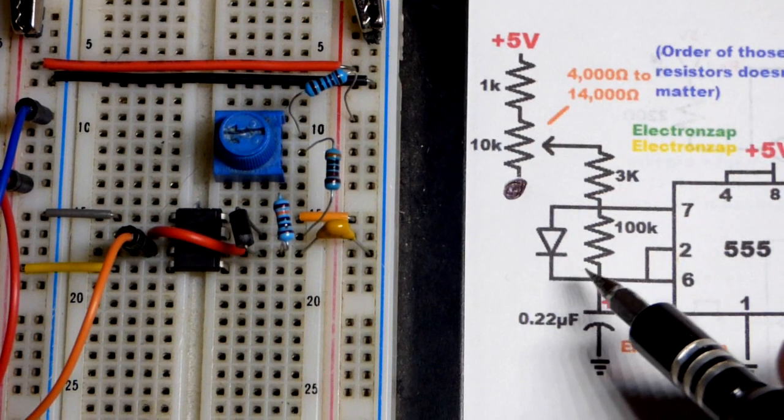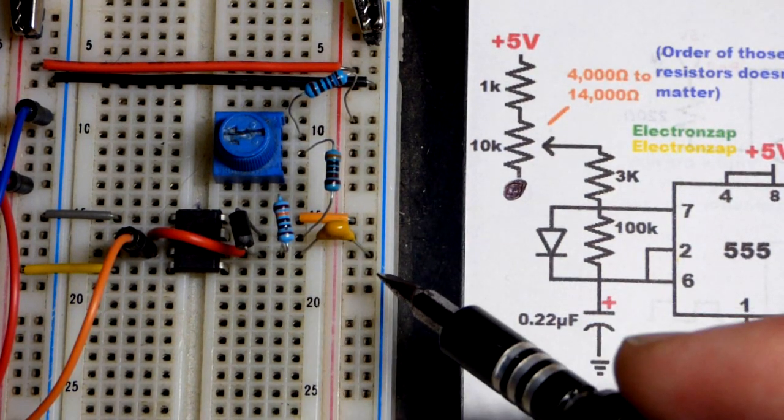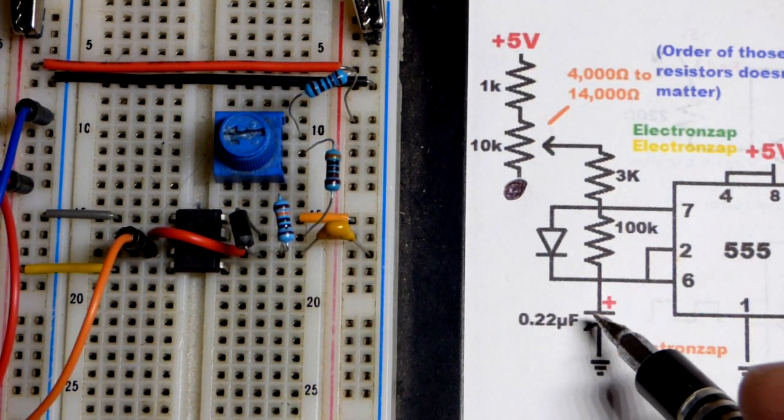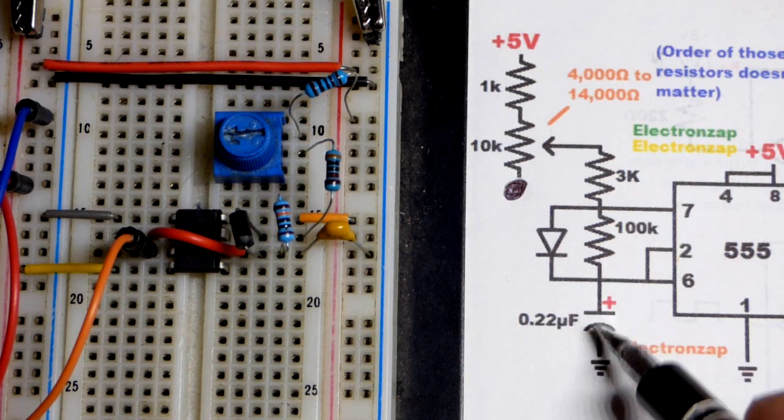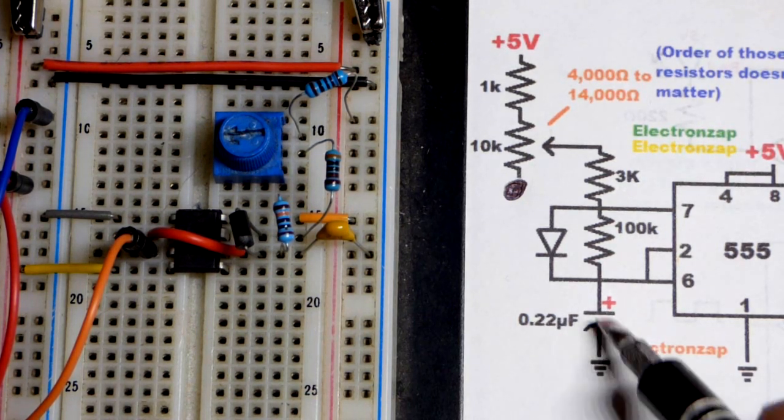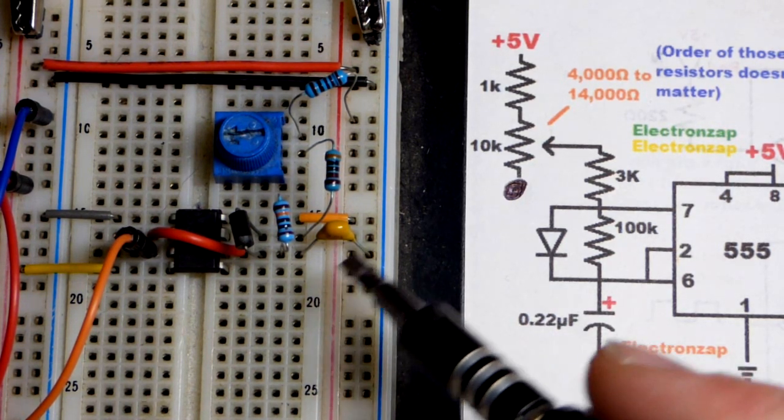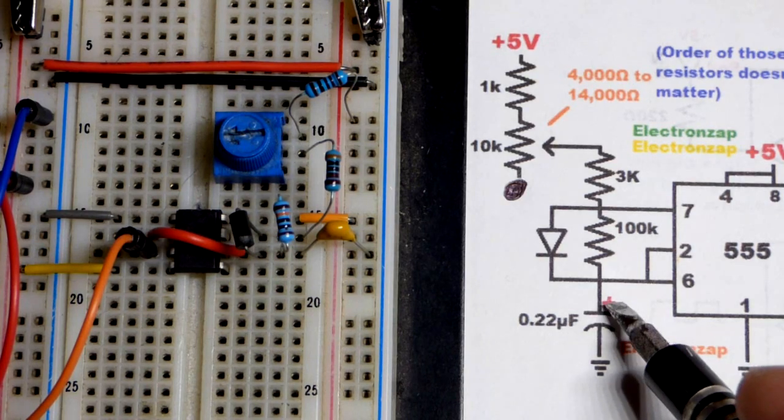A lot of times you see a capacitor from pin number five to ground. I don't have one because it kind of blocks things and I got to explain what it is all the time. People are not used to seeing it. You can get away without it most of the time. We have 0.22 microfarad, a small value.